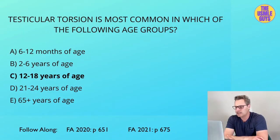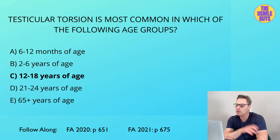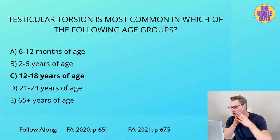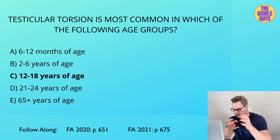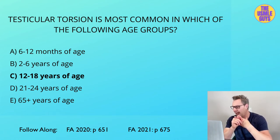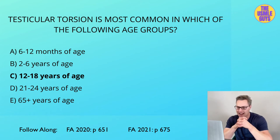The correct answer here is C. Testicular torsion is most commonly seen between 12 and 18 years of age, and it happens when there's rotation of the testes around the spermatic cord and vascular pedicle. This could happen as a consequence of a traumatic event or spontaneously. It's also associated with a congenital horizontal positioning of the testes known as bell clapper deformity. Patients will be in severe pain instantly, the testes will be high-riding, and there will be an absence of the cremasteric reflex. This is an emergency — orchiopexy is needed within six hours of onset.